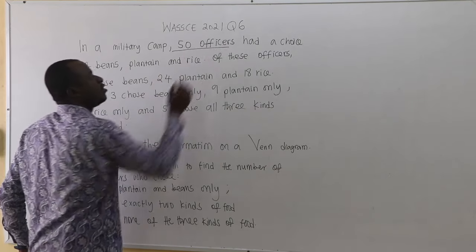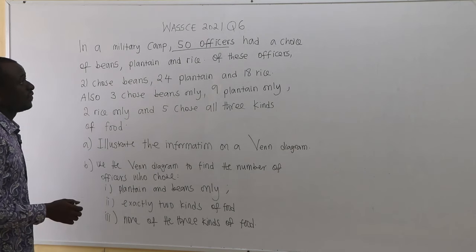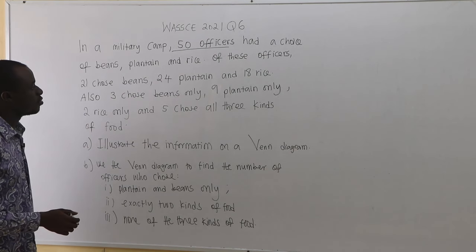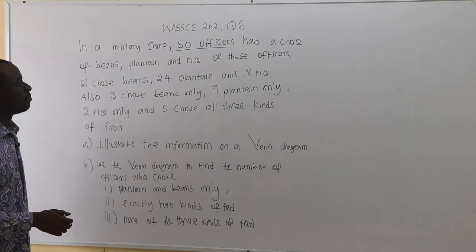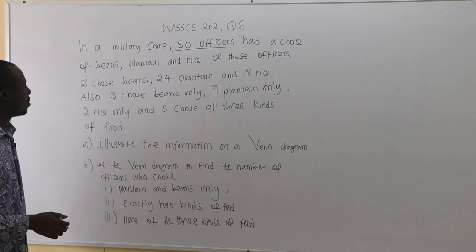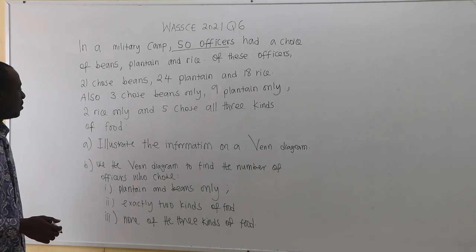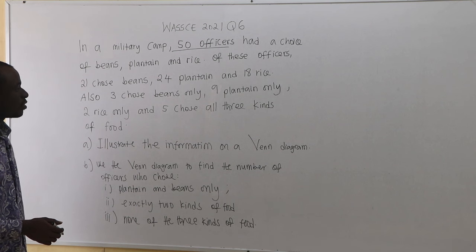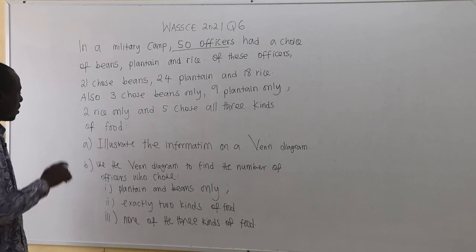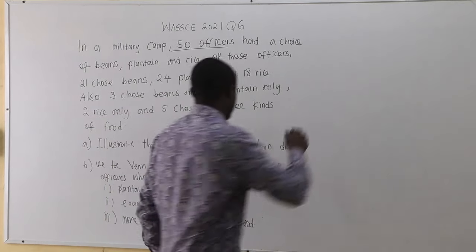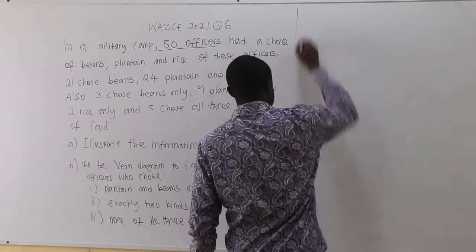So the universal set is 50. Of these officers, 21 chose beans, 24 plantain and 18 rice. Also, 3 chose beans only, 9 plantain only, 2 rice only and 5 chose all three kinds of food. There is a part which illustrates the information on the Venn diagram.